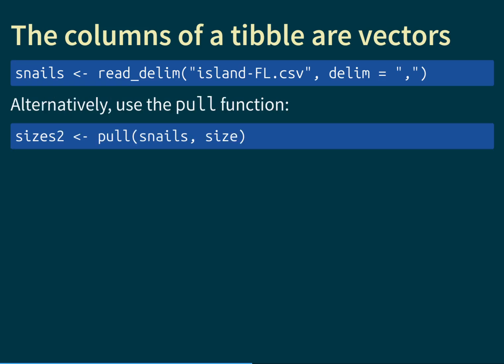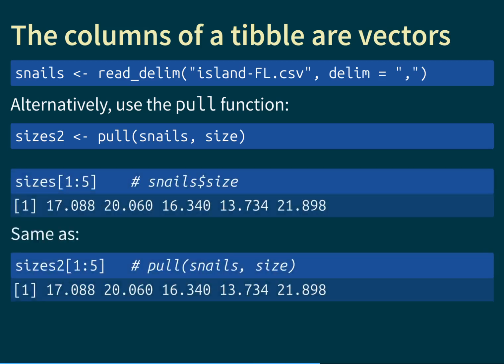A tidyverse alternative to the dollar notation is the pull() function, which is a bit longer but perhaps neater. pull() takes two arguments: the first is the table from which you want to extract, and the second is the name of the column to extract as a vector. For example, sizes2 <- pull(snails, size) extracts the size column. The two approaches produce the exact same result — the dollar notation and the pull() function do the same thing.